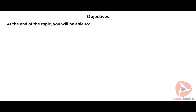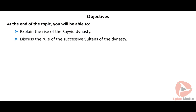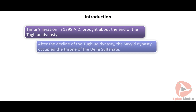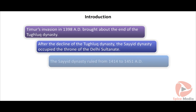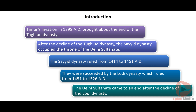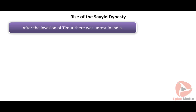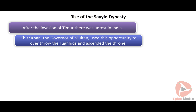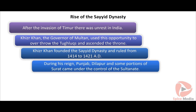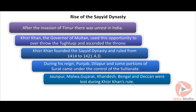The Syed dynasty ruled from 1414 to 1451 AD. They were succeeded by the Lodi dynasty, which ruled from 1451 to 1526 AD. The Delhi Sultanate came to an end after the decline of the Lodi dynasty.